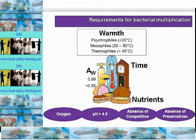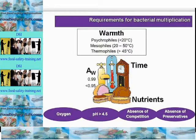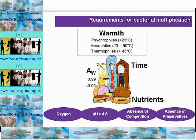Regarding warmth: although the danger zone is quoted as 5 to 63 degrees Celsius, the range for most rapid multiplication of pathogens is usually 20 to 50 degrees Celsius, with the best temperature being around body temperature, 37 degrees Celsius. Bacteria can be split into those that prefer low, medium, and high temperatures. Psychrophiles prefer temperatures below 20 degrees Celsius and include bacteria which cause spoilage in the fridge, for example Pseudomonas, which is a slime bacteria.